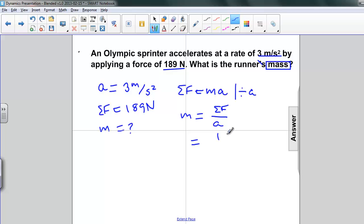We substitute these in. We have 189 newtons divided by 3 meters per second squared. And as we discussed before, the newton is a kilogram meter per second squared. So newtons divided by meters per second squared is just kilograms.